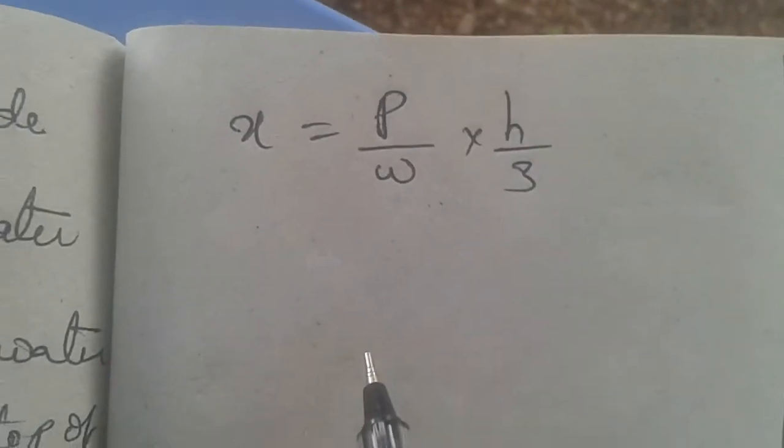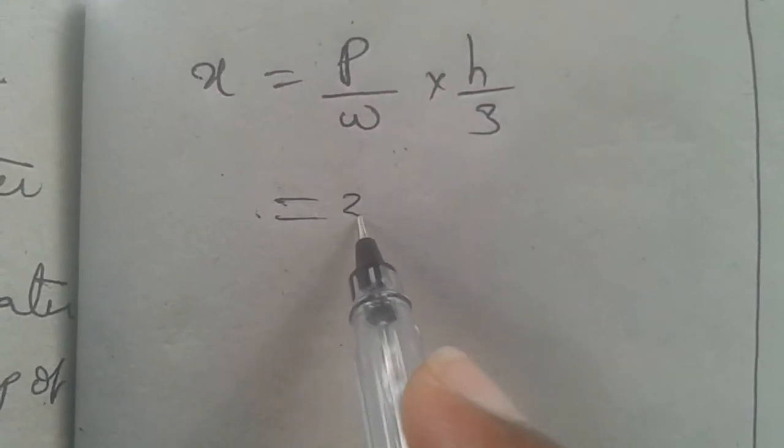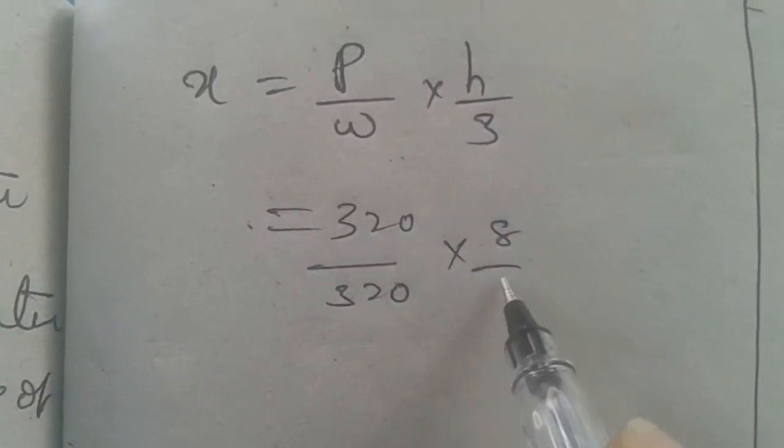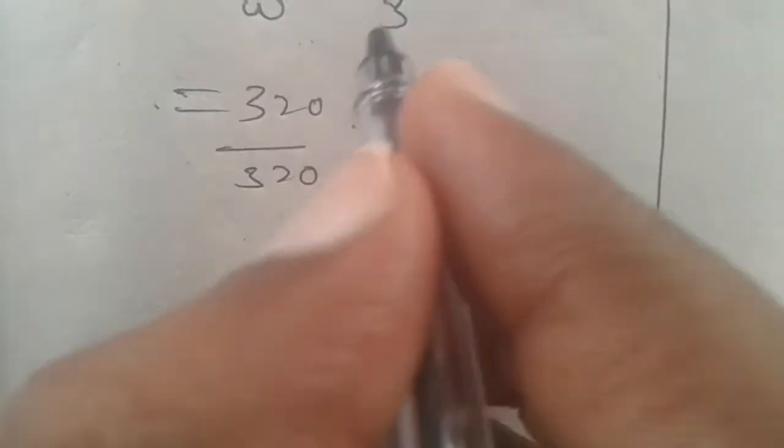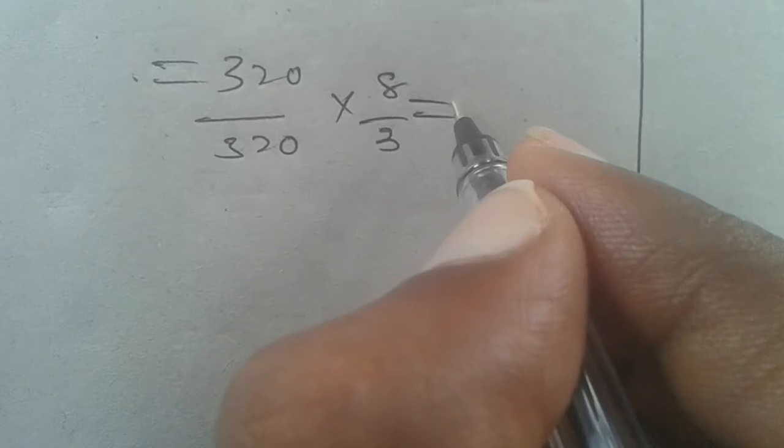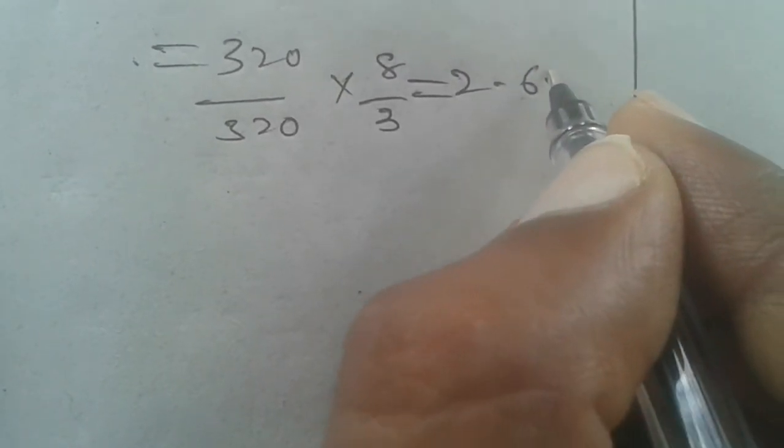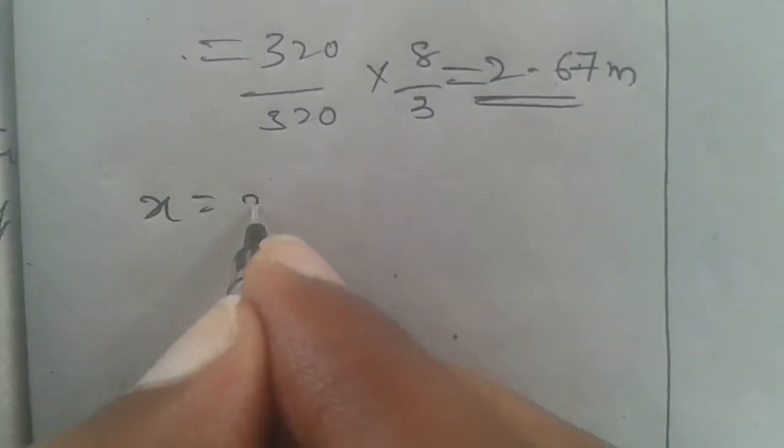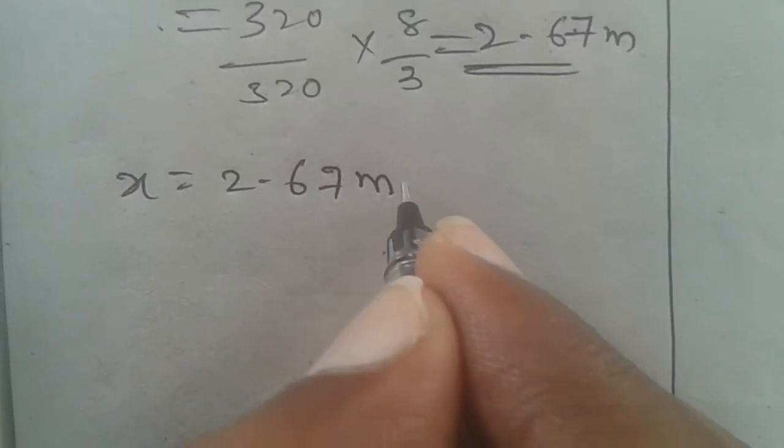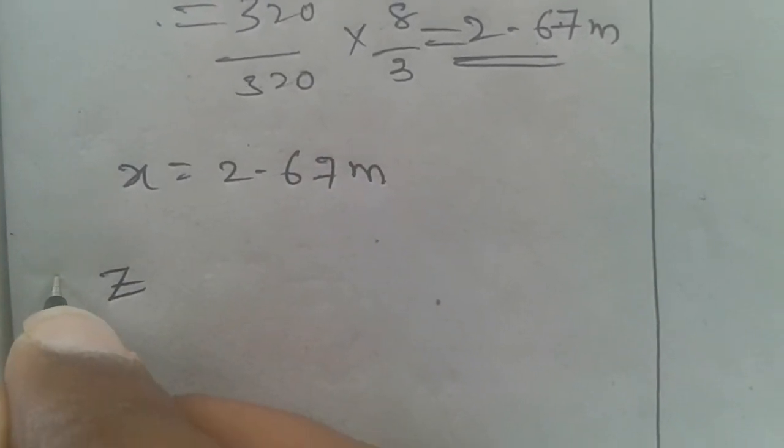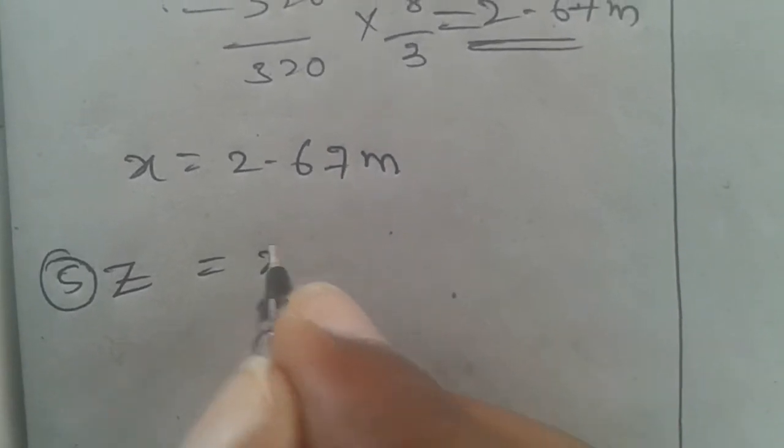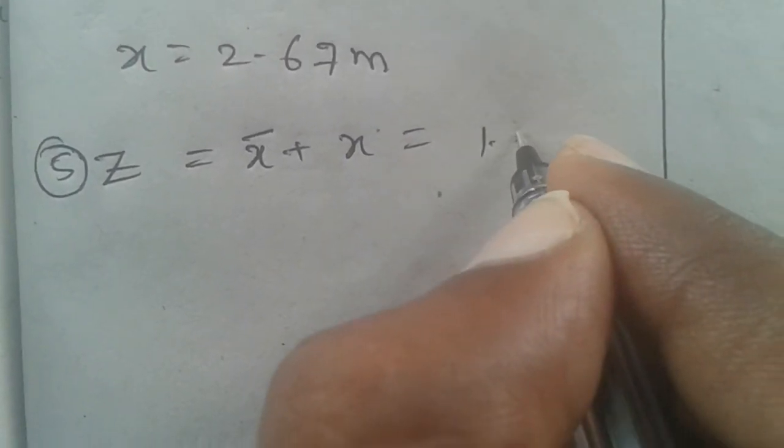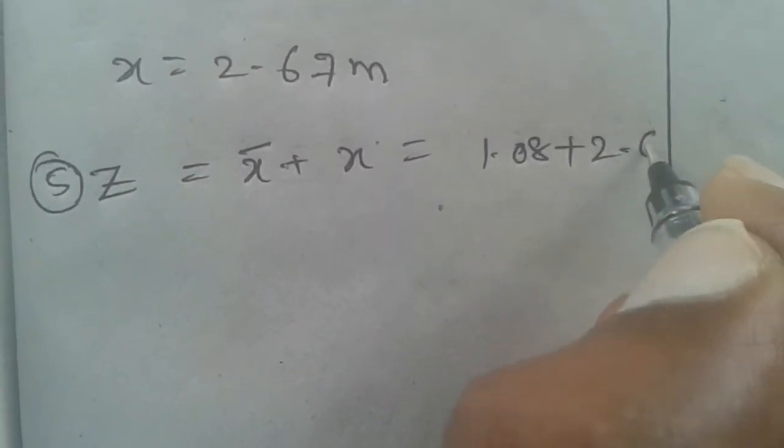X also came from the formula X equals P by W times H by 3. Putting all the values 320, 320, we get the value 2.67 meters. Z equals X bar plus X.